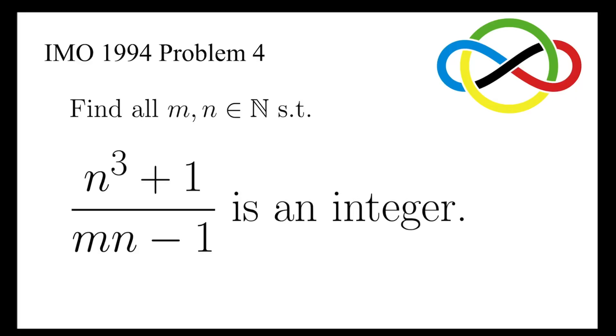Let's take a look at problem 4 in IMO 1994: find all natural numbers m and n such that n cubed plus 1, all divided by mn minus 1, is an integer.